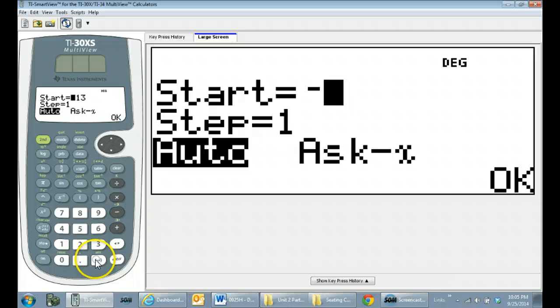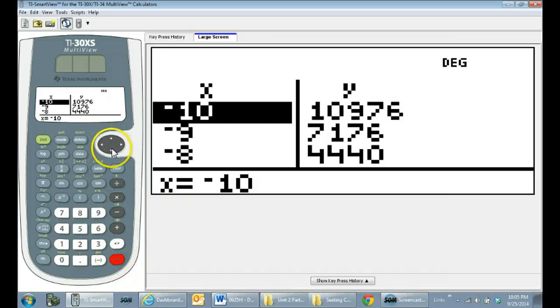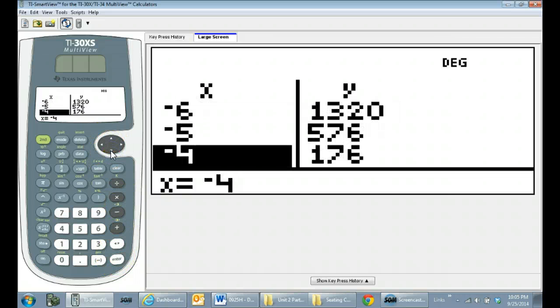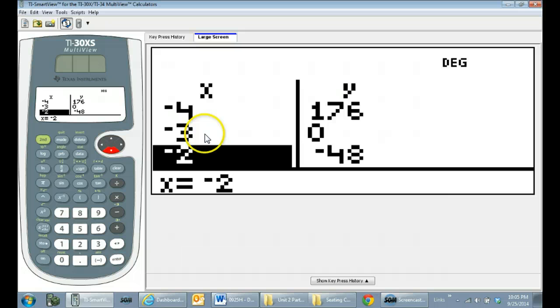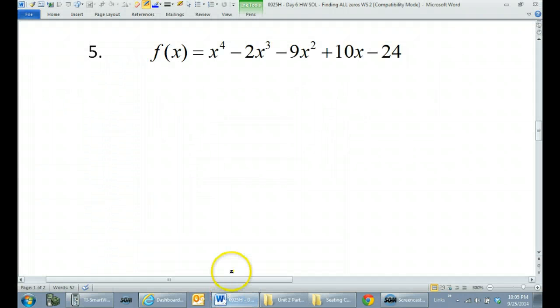I usually like to start at negative 10 because it rarely goes past that. Then I can just scroll down looking for a zero. The first zero I find is negative 3. I need a zero on the y side, so negative 3 is my first zero. Let's go ahead and use that and see what we can do with it.